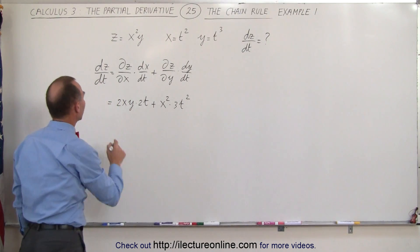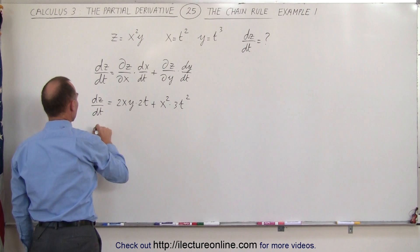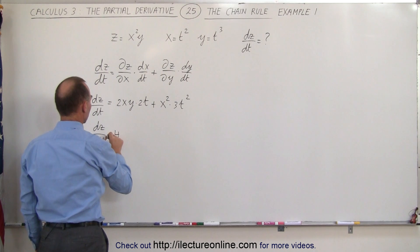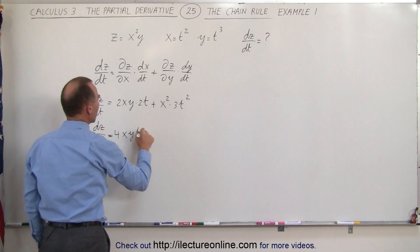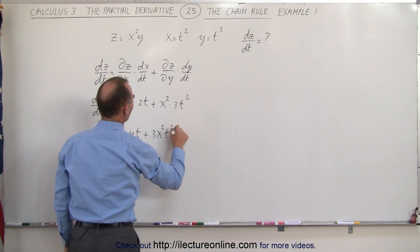Simplifying that a little bit, we can then say that dz dt, let me rewrite it here. dz dt is equal to 4xyt plus 3x squared t squared.